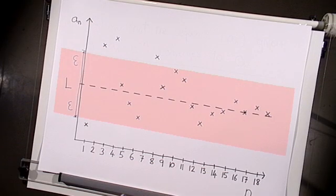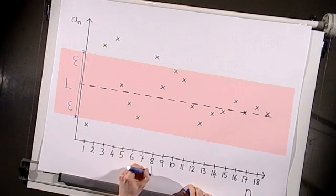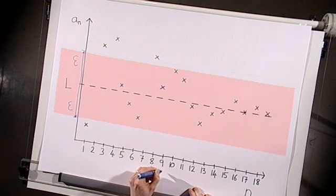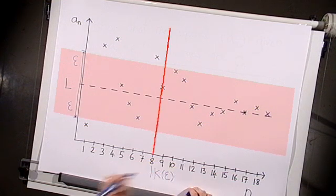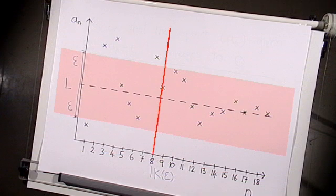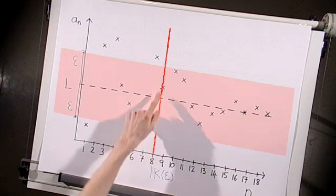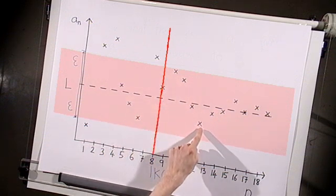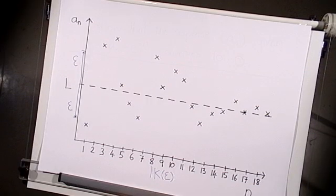In this example, we can take k of epsilon to be equal to 8, because from the 8th term onwards, the terms of the sequence all lie within a distance epsilon of the number l. But this on its own isn't enough to show that the sequence converges to l — we've just looked at one choice of epsilon. The definition says that this should work for any choice of epsilon, however small. So let's go back to our illustration and choose a smaller value.